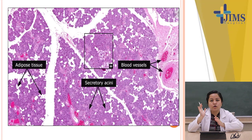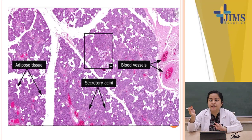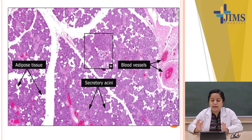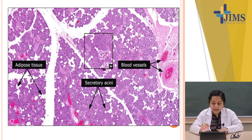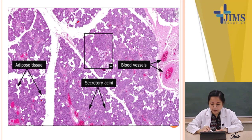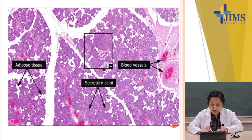Now looking at histology of a normal salivary gland for revision. You can see adipocytes — these appear as vacant spaces. The blue cells are acini, and the reddish areas with RBCs are blood vessels.